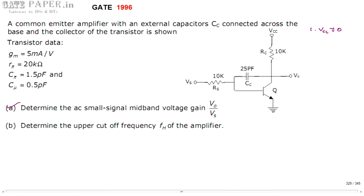Alternatively, using superposition theorem: if a circuit has multiple sources, the overall response is the sum of individual responses. When considering one source at a time, all other sources must be disconnected — voltage sources are shorted, current sources are open-circuited. So for AC analysis, considering only the AC source, VCC (the second source) must be grounded according to superposition theorem. That is the first important point.